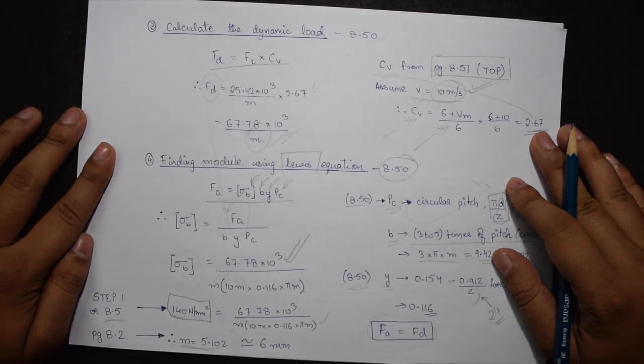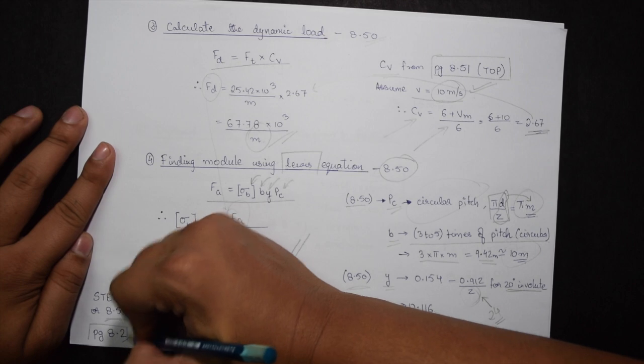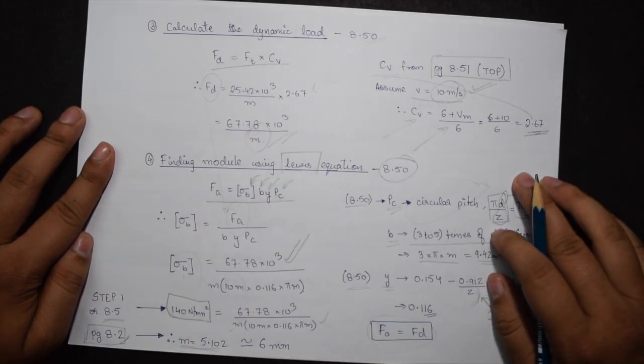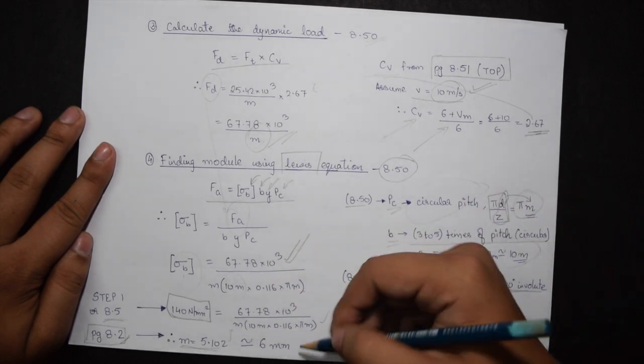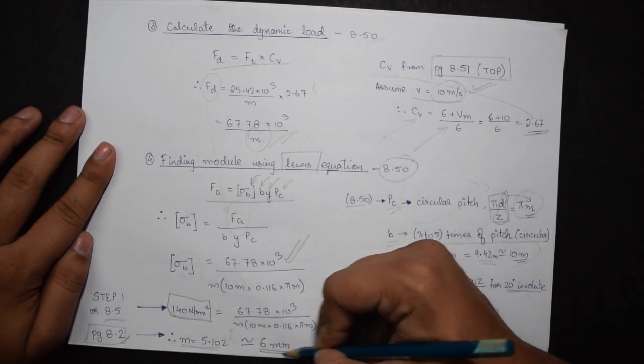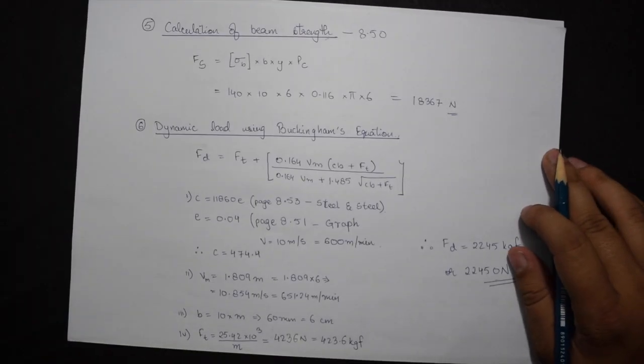I need to standardize this value from page number 8.2 on the bottom table. The very next value from 5.102 is 6, therefore my M becomes 6. Now in the same formula I will substitute the value of M and calculate the value of FS, that is the beam strength.